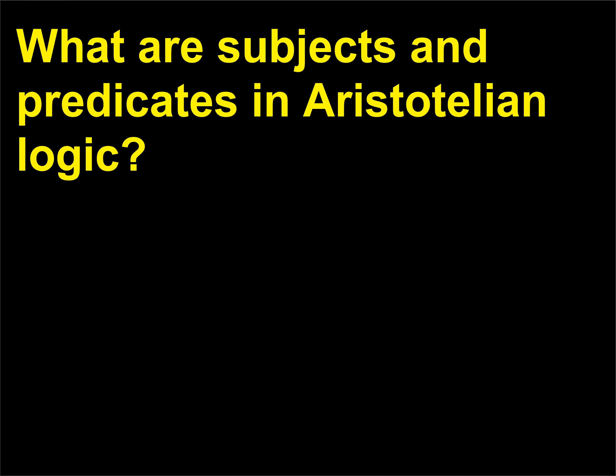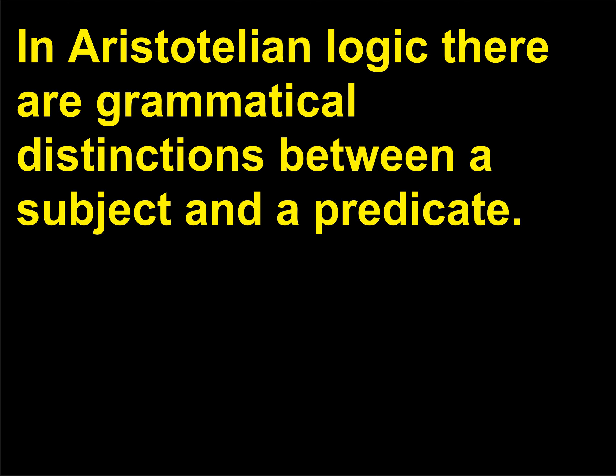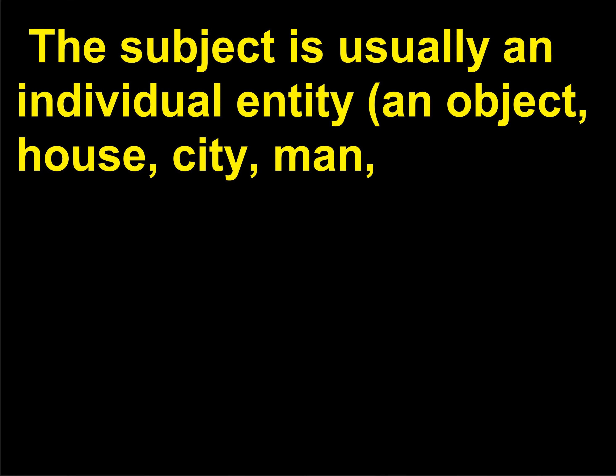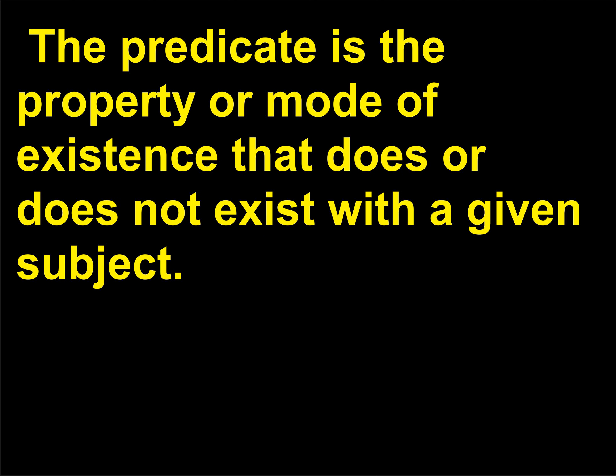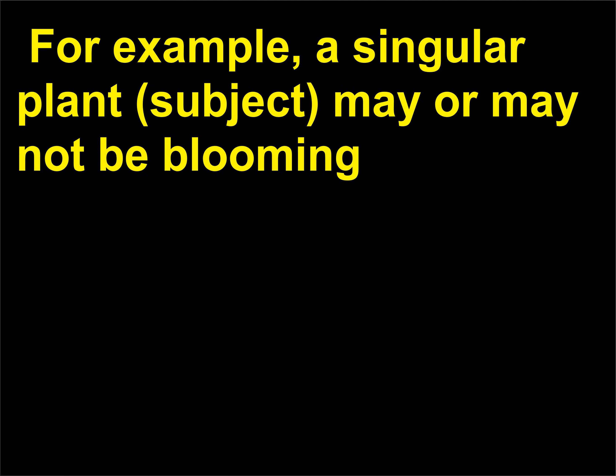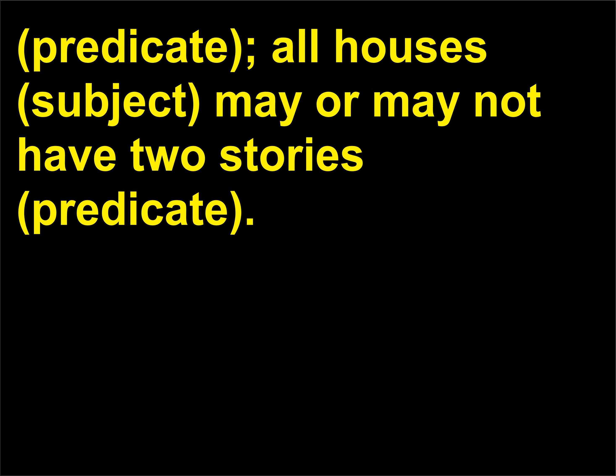What are subjects and predicates in Aristotelian logic? In Aristotelian logic there are grammatical distinctions between a subject and a predicate. The subject is usually an individual entity — an object, house, city, man, animal — or it may be a class of entities: objects, houses, cities, men, animals. The predicate is the property or mode of existence that does or does not exist with a given subject. For example, a singular plant (subject) may or may not be blooming (predicate); all houses (subject) may or may not have two stories (predicate).